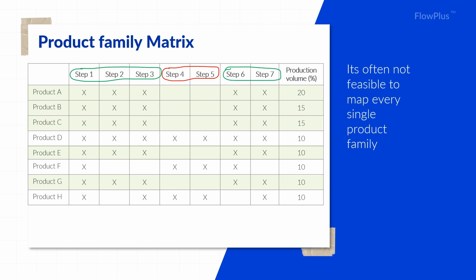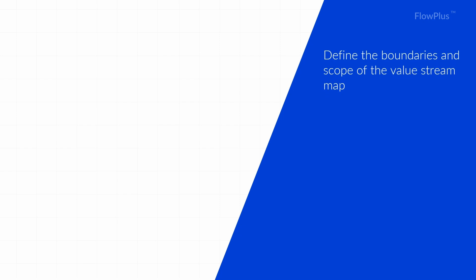There is no exact way to do this. You may already have in mind what product family or product you want to map. The key thing is to agree, as a team, what is within scope and the boundaries that are within your team's control. This ensures that all suggested improvements can be acted upon and you don't waste time on things that are out of your control. And this is not to say that you should narrow the scope onto a single department — you just need to be realistic about what you can control and influence.